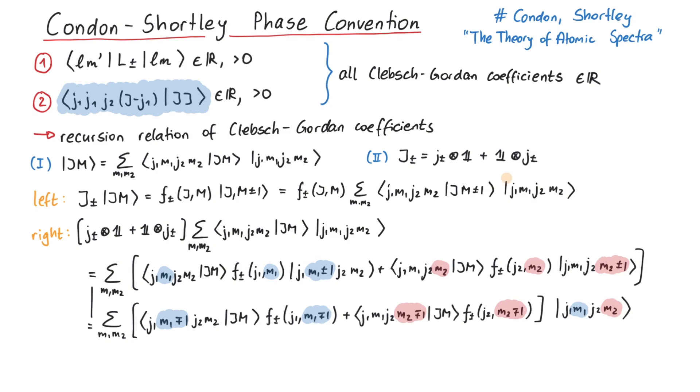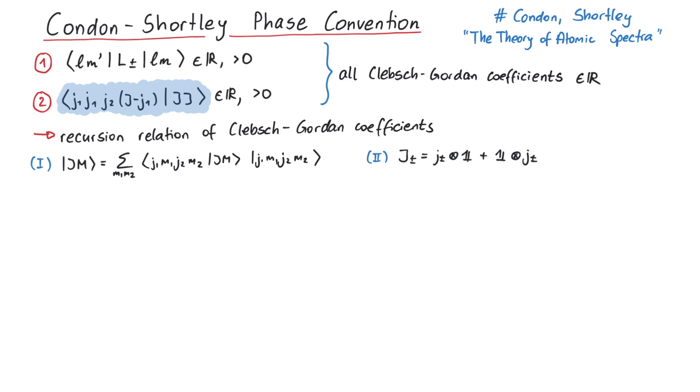Now we have the same state on the left-hand side and the right-hand side. Since our equations should be true for any j1 or j2, we can remove the state from both equations. This leaves an equation with three Clebsch-Gordan coefficients.